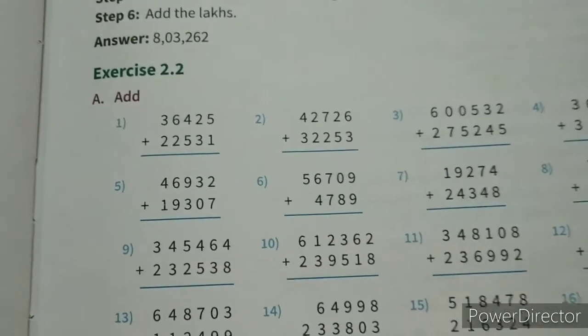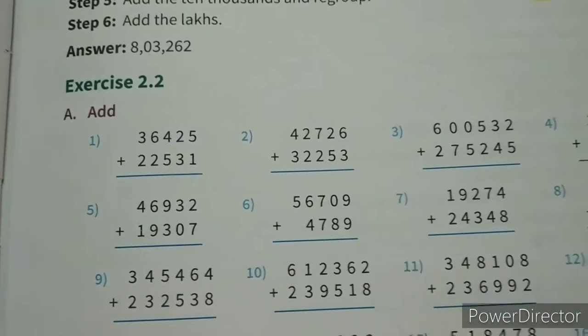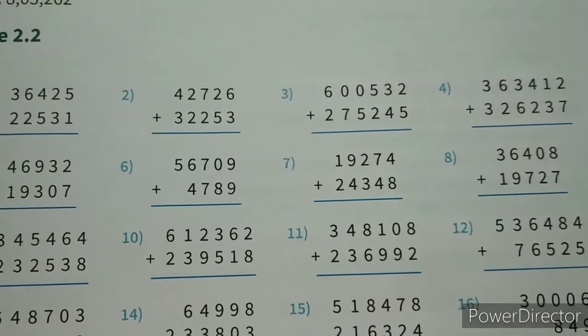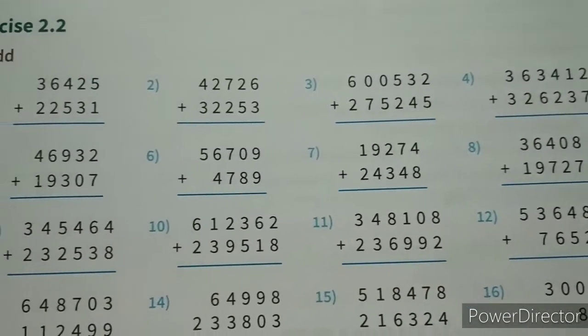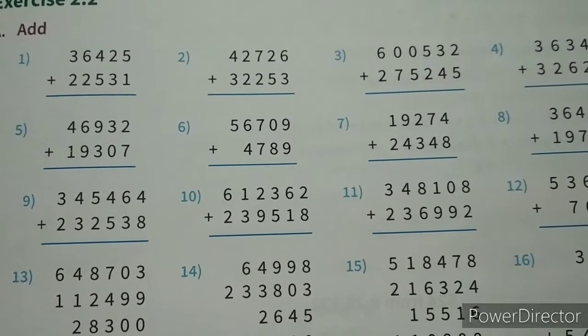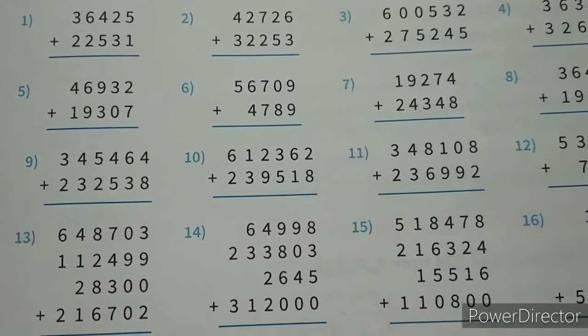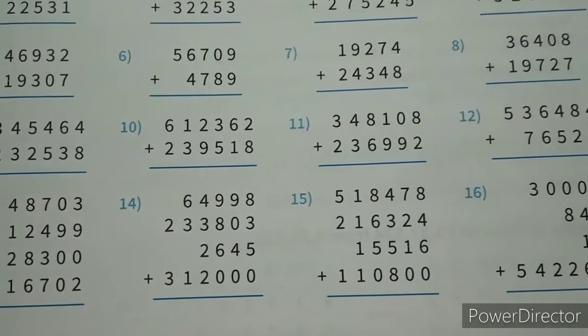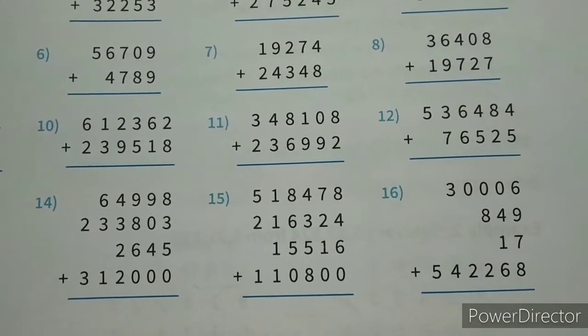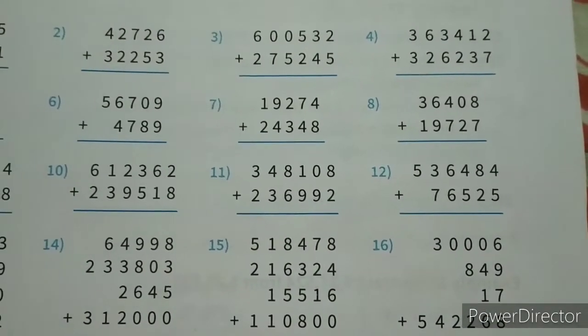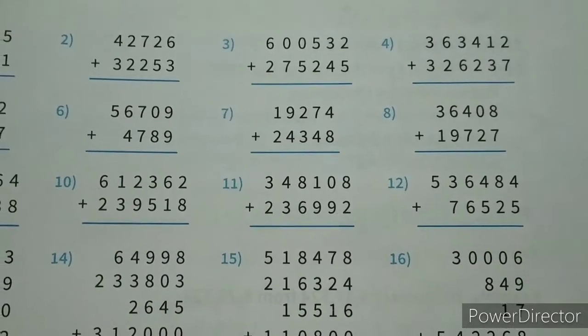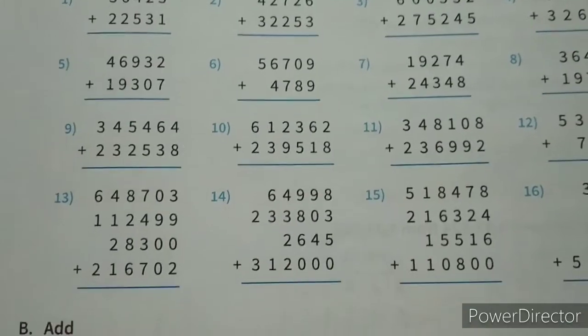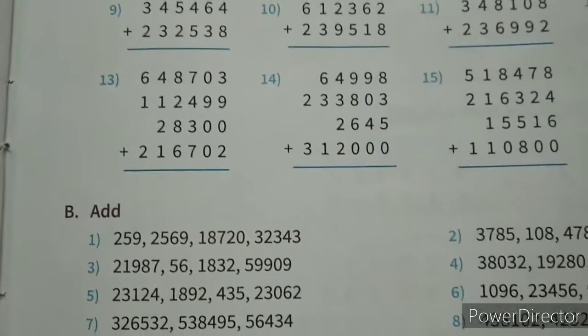This is exercise 2.2, these are the problems. Total number of problems are there 16. Children you try to do this all, and this is your second number.